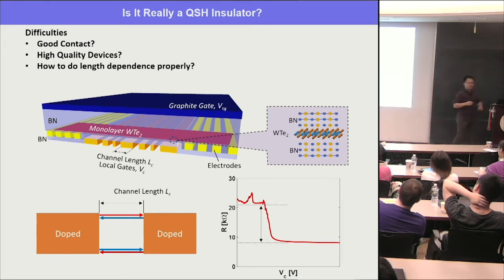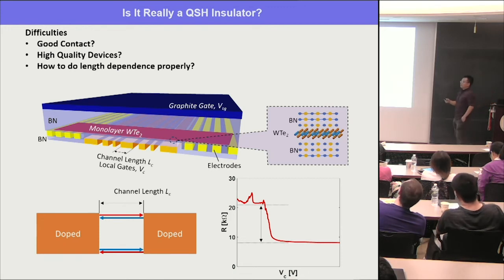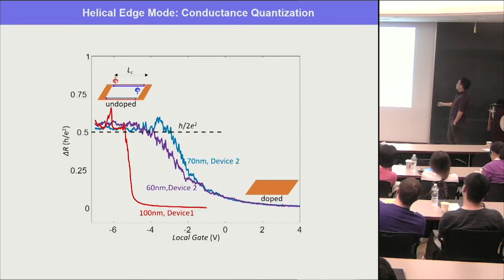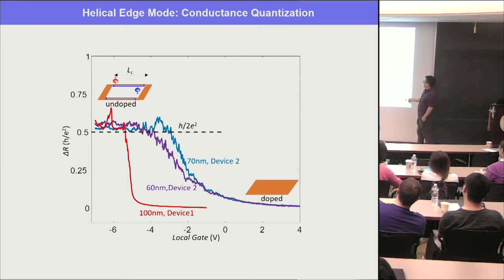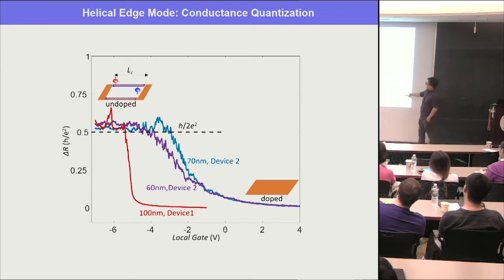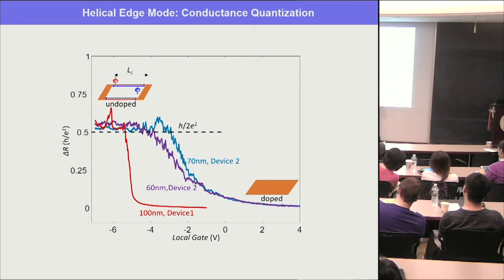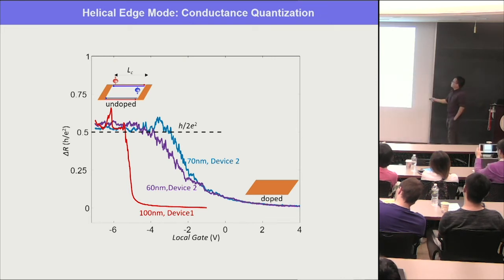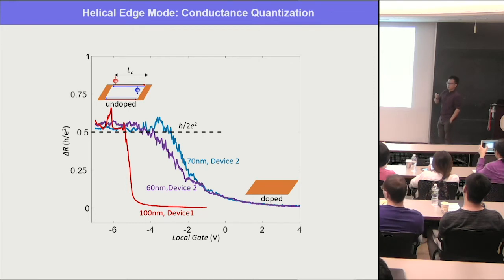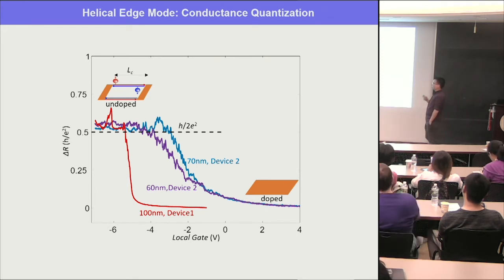You can do length dependence study in the same device by choosing different local gates with different widths — so you study length dependence consistently. With 100 nm channel, 60 and 70 nm local gates, and two devices made, the three curves look very similar in terms of step height. The step height measures the edge mode resistance and equals h/2e² — meaning for each single edge, you have e²/h conductance — for three different lengths. That's what we see, and what we want to see.